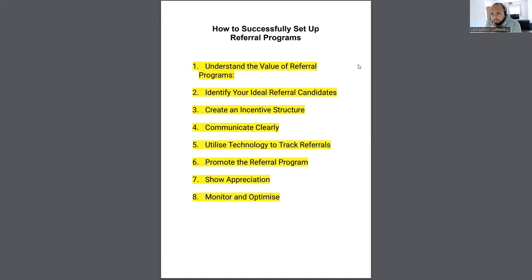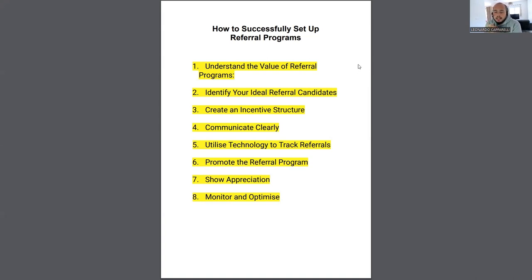The third step is to create an incentive structure. An incentive structure answers: why should they do it? That ties back to step one — understanding the value. If the incentive is cheaper training, they will do it — but only if they like what you currently do. If they don't believe in your company or your training, they won't do it. You have to create an incentive that makes them think, 'Wow, I'm getting a lot of value from this, and if I refer someone I get this in return.'